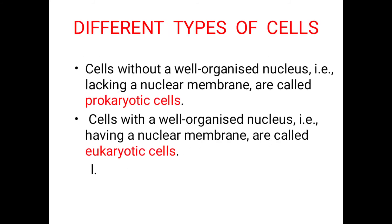Let's study about the different types of cells. The first category is prokaryotic cells. Cells without a well-organized nucleus, that is lacking a nuclear membrane, are called prokaryotic cells. These are considered to be very old type of cells. The second category is eukaryotic cells. Cells with a well-organized nucleus, that is having a nuclear membrane, are called eukaryotic cells, and are considered to be an advanced type of cells.